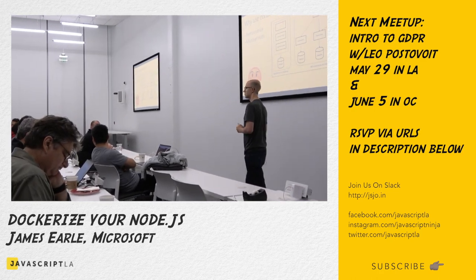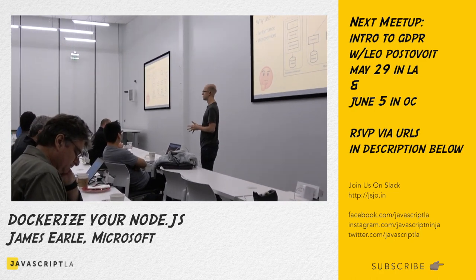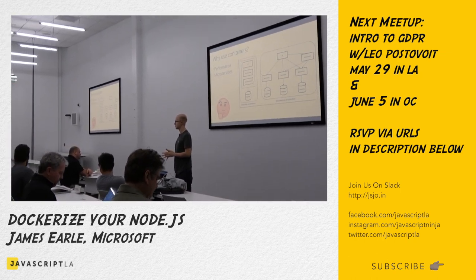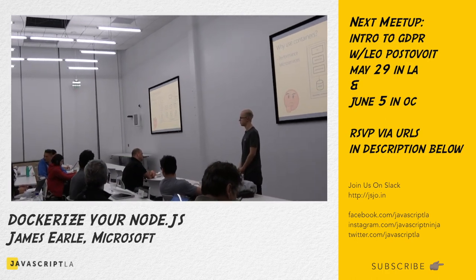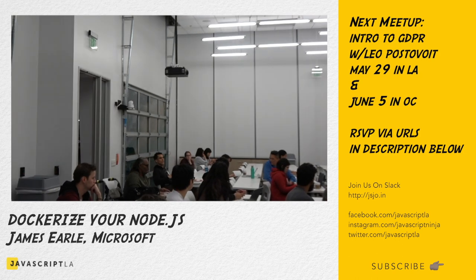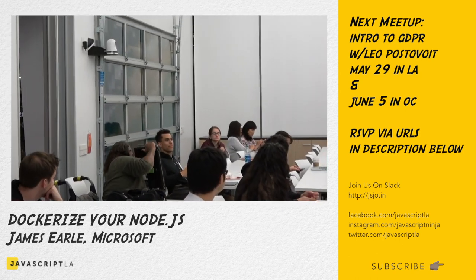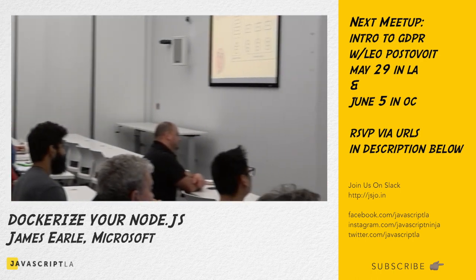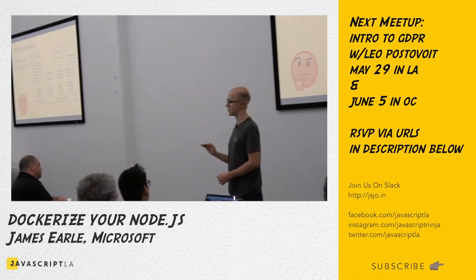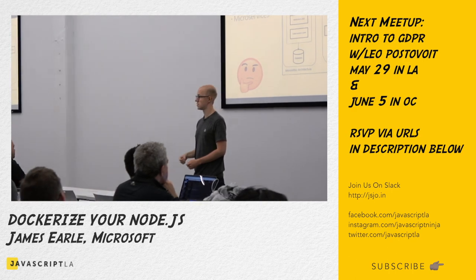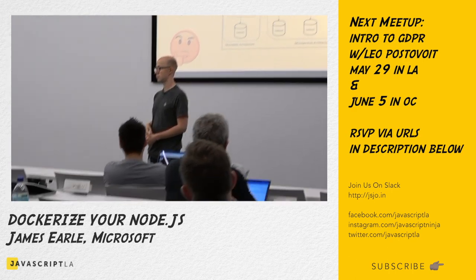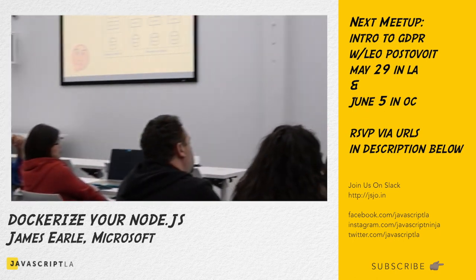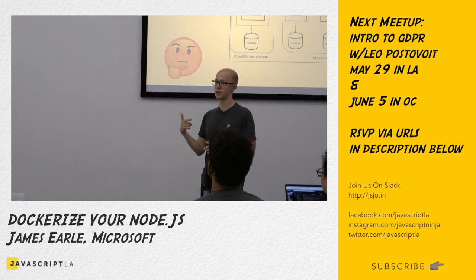One advantage of Docker is consistent development environments — your team member just gets a container. But it seems like in development, any change requires rebuilding the image, which seems slow. So every Docker command is a layer, and every one of those gets cached. Only the things you change get redone. So every time you rebuild, it's way quicker — almost instant. You can't avoid that; you do have to rebuild, but it's fast.